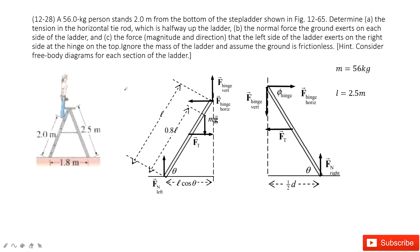Now we look at this system. We have a ladder with two sides. At one point, we consider it a hinge — a rotation axis. The length is given as 2.5 meters. A person stands at a position 0.8 times L from the ground. The person's mass is also given. So all the quantities are given.